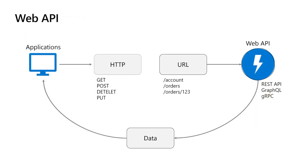Web APIs allow software components to communicate and interact with each other over the internet — for example, a mobile application requesting data from a database via a web API. Accessing a protected web API is done through OAuth 2 bearer tokens, which can sometimes be called JWT authentication. Users don't sign in directly to the web API; rather, the user signs into the application, then the application acquires an access token to call the web API on behalf of the signed-in user.